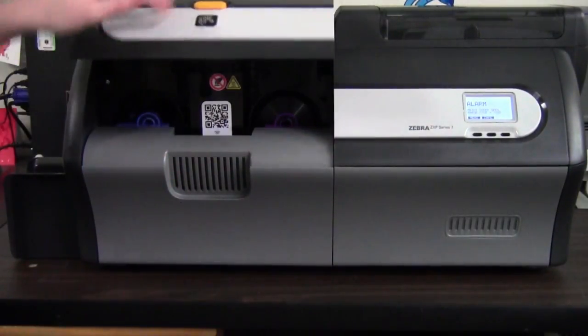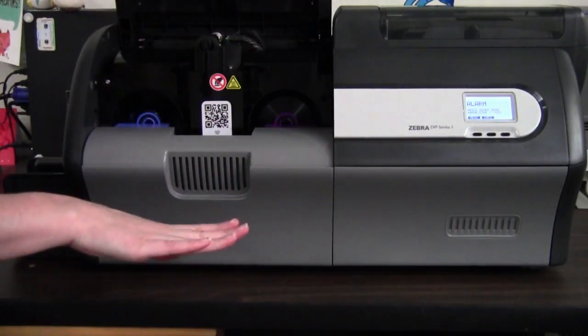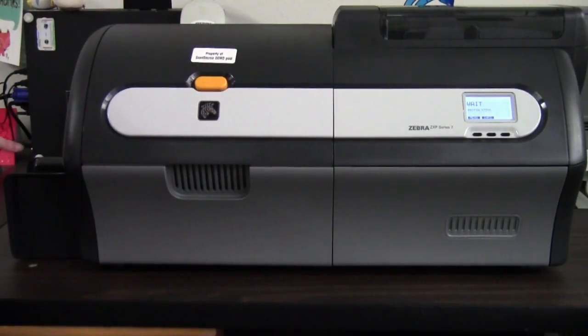This comes down. Oh, before I shut it, this is your printhead right in here. So the printhead heats up the ribbon and transfers it to the card. This is closing it up. Right there is where your cards come out.